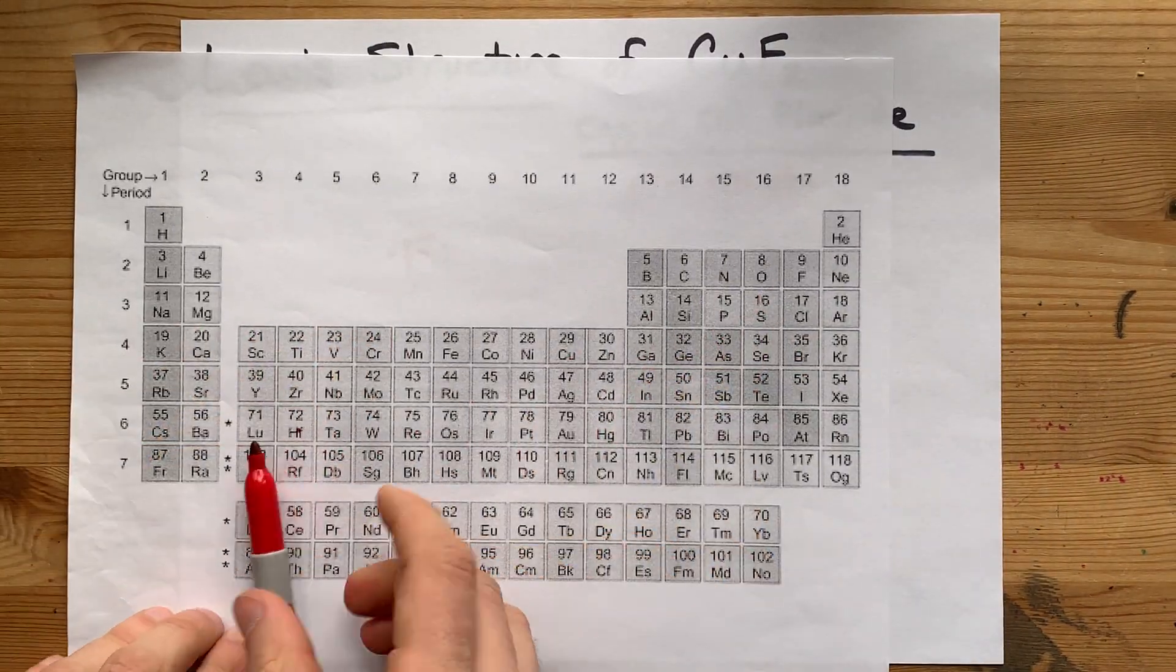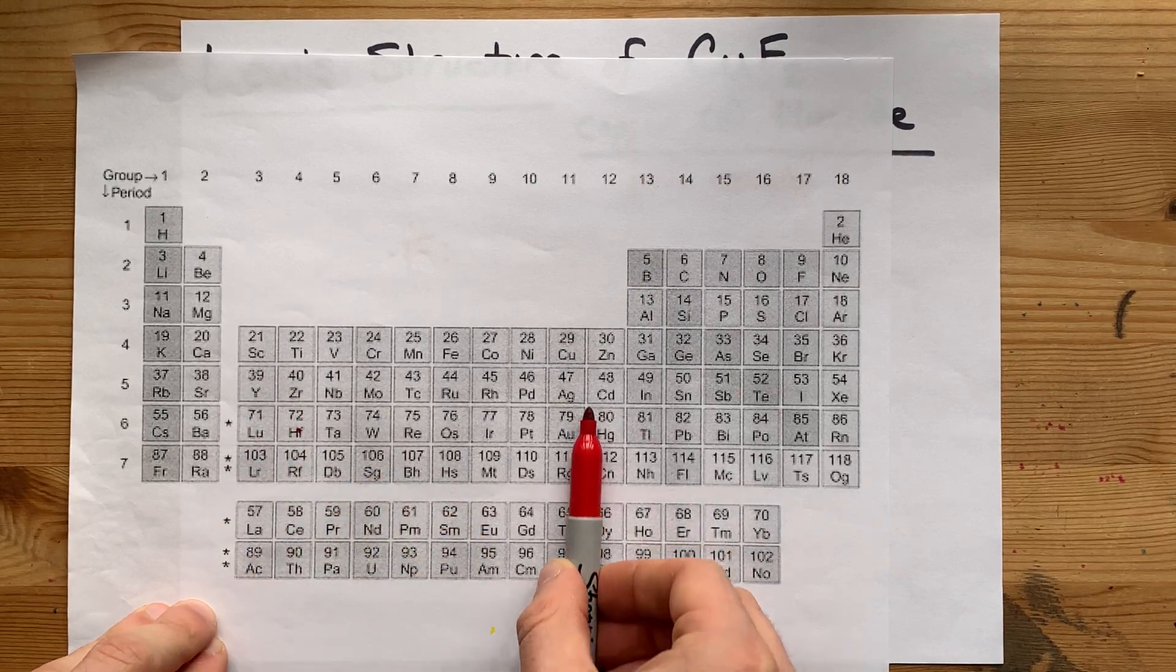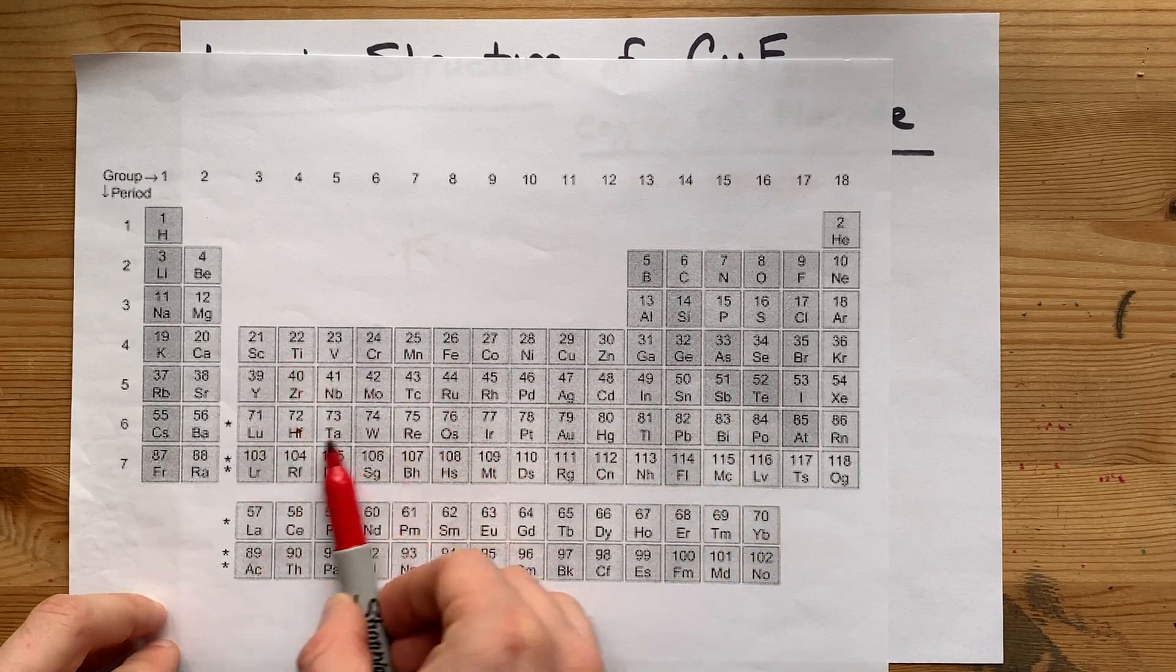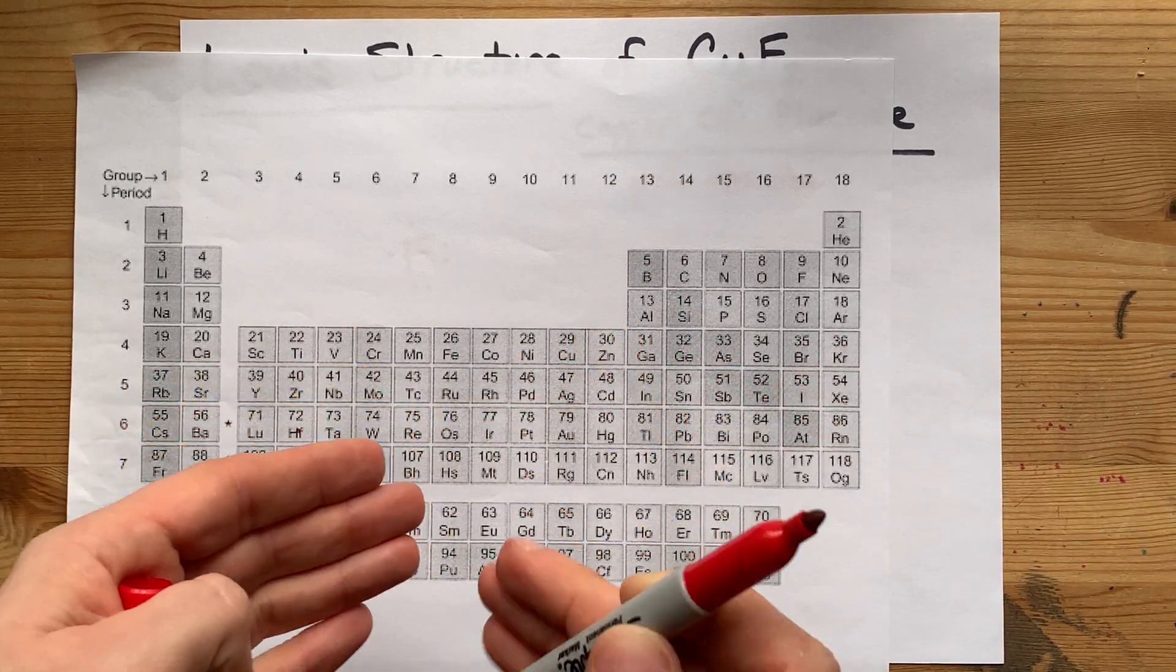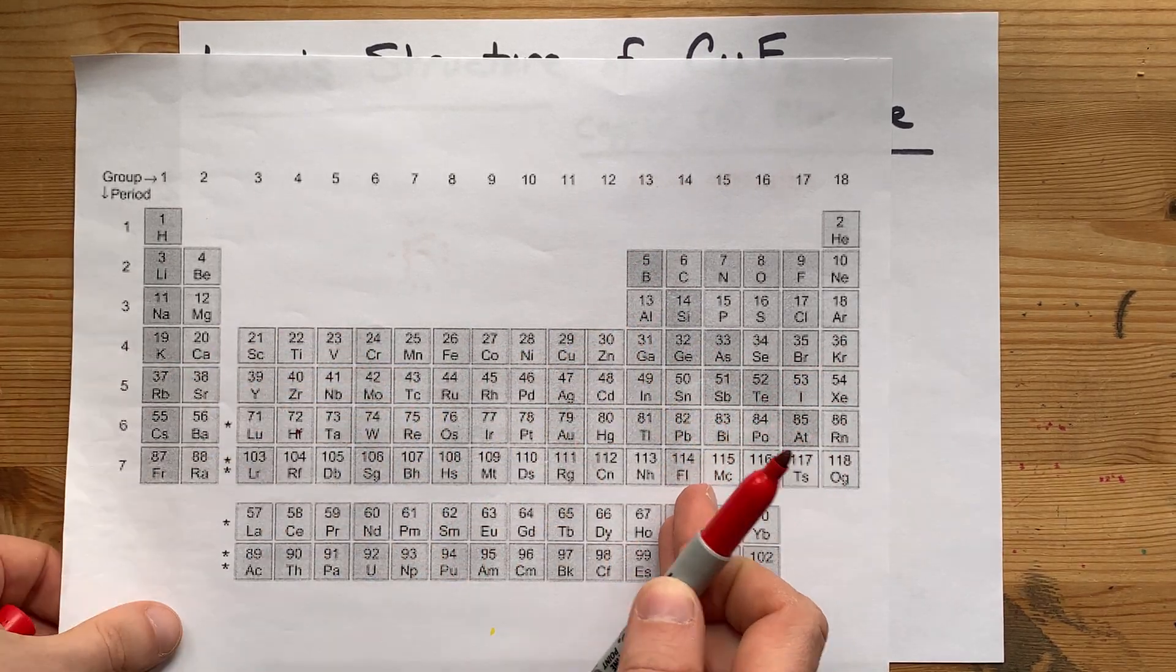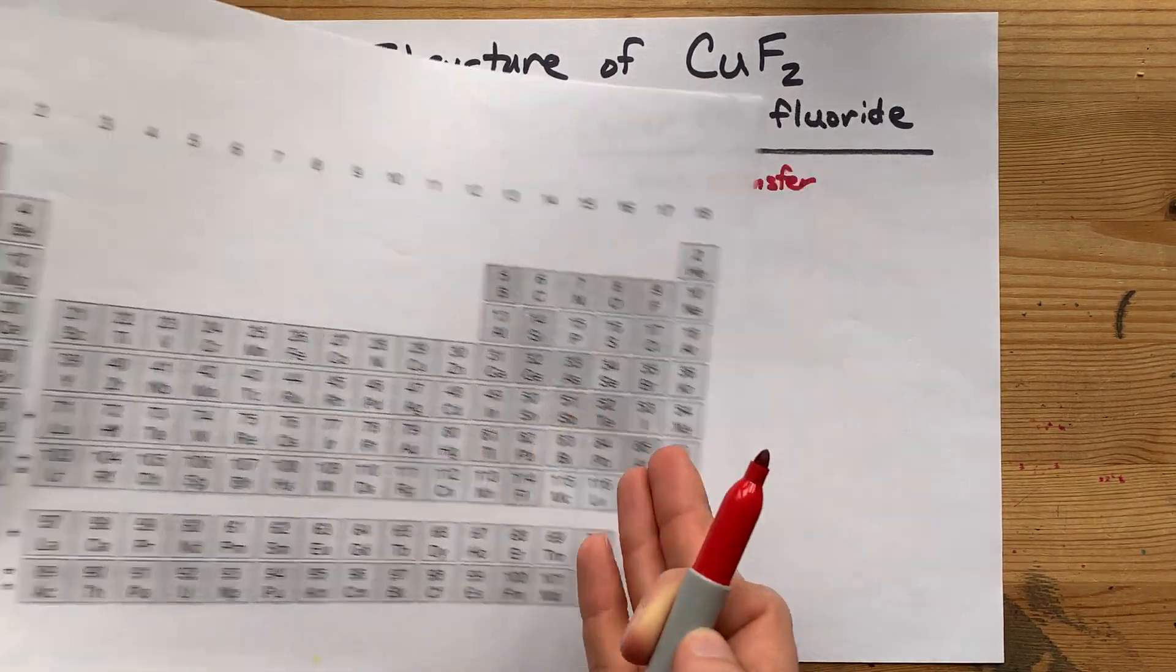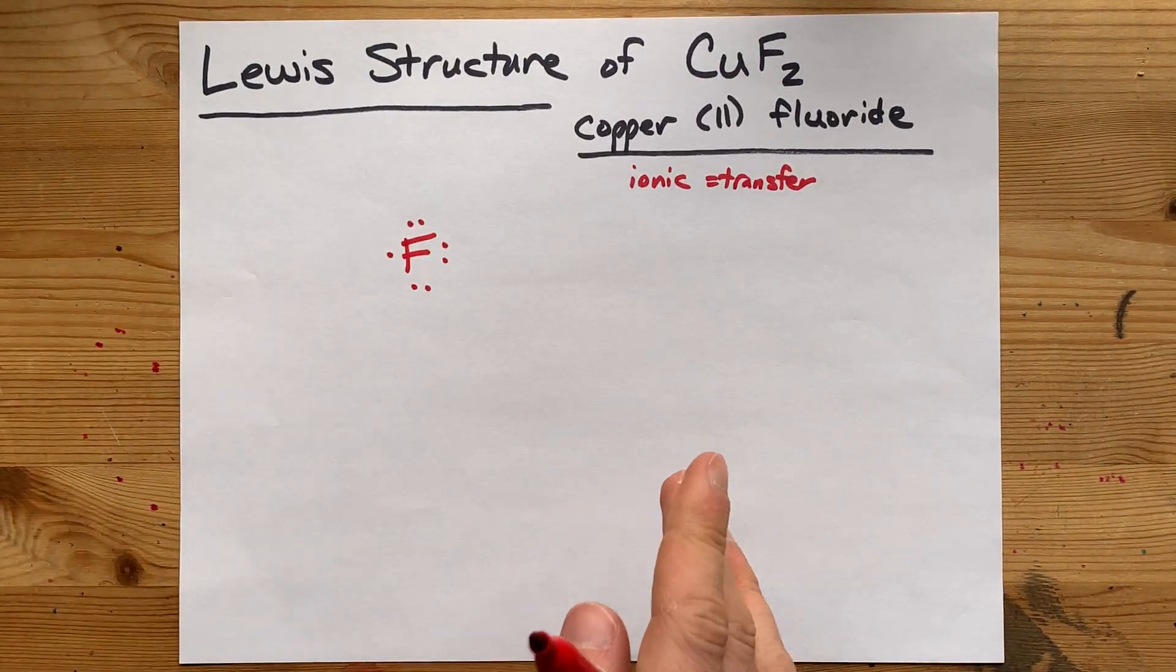Copper is trickier. Here in the transition metal block, or this block that I'm outlining right now, most of these atoms can have more than one possible charge. Your job is to figure out what charge your atom actually has and give it that many valence electrons.